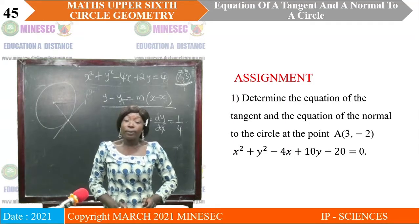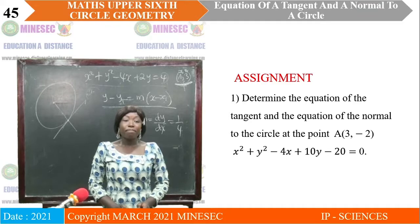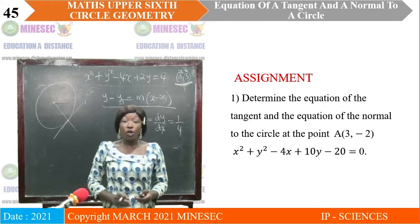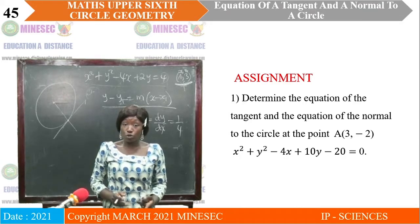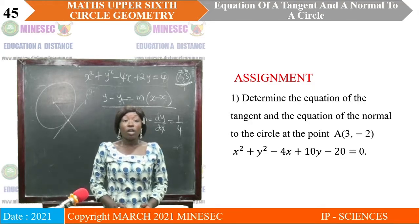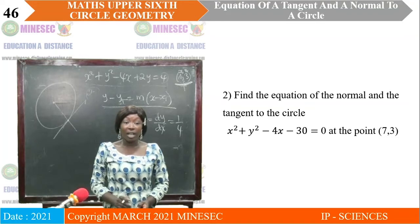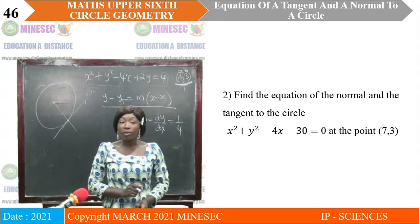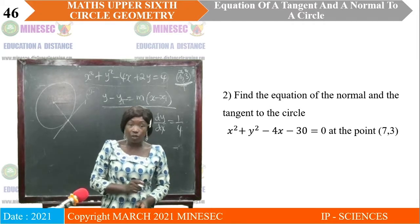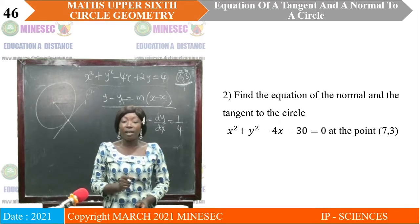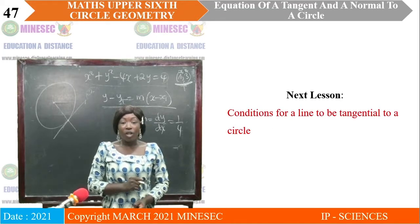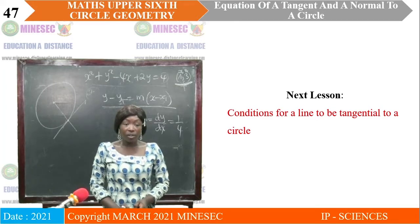Before we go, take this question and solve it. You can apply both methods: determine the equation of the tangent and the equation of the normal to the circle at point A(3, −2). Also, find the equation of the normal and the tangent to the circle at the point (7, 3). See you next lesson, titled Conditions for a Line to be Tangential to a Circle.